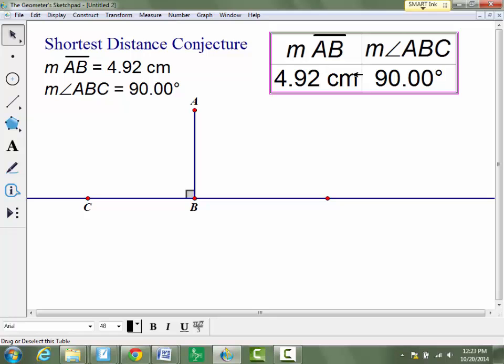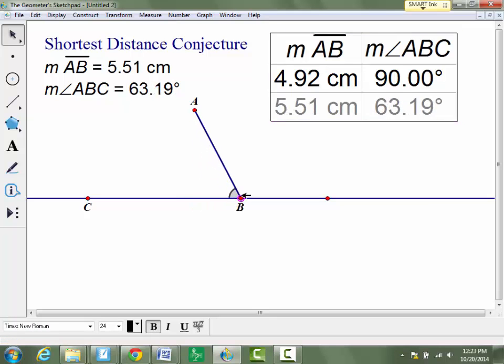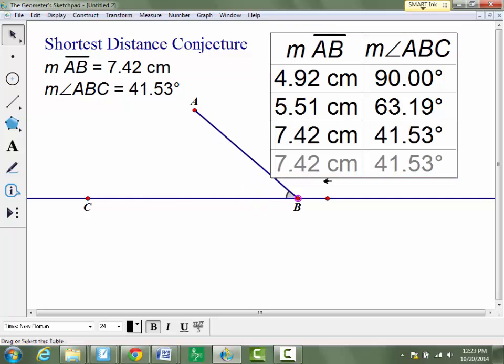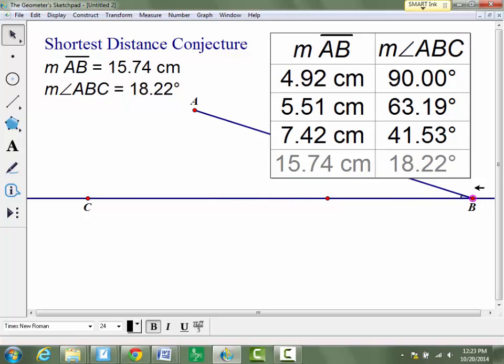So here it states that at 90 degrees the measurement is 4.92 centimeters. If I double click the table, it gives me another row here, and I can change it to show that as the angle measure moves farther away from 90 that this distance becomes bigger. And I can keep moving that out to show that. Something like that. And that is the shortest distance conjecture.